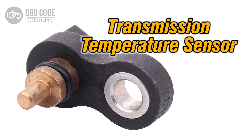The P0710 trouble code indicates that there is a malfunction in the transmission fluid temperature sensor A circuit. This sensor measures the temperature of the transmission fluid and sends this information to the engine control module (ECM) or transmission control module (TCM). The ECM or TCM uses this data to adjust transmission shifting strategies, torque converter lockup, and other functions based on fluid temperature.